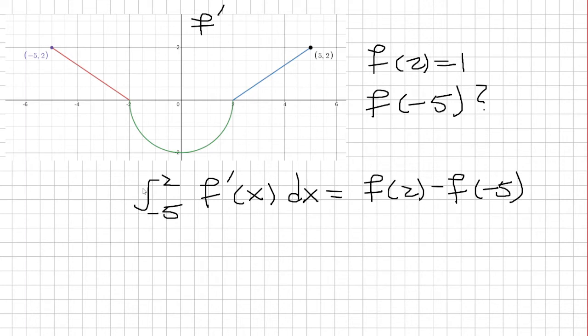Now, what is the integral from negative 5 to 2 of f prime of x? Well, that's just going to be the area from negative 5 all the way up to 2. So we have the area from negative 5 to 2. That's just a right triangle. The base is 3. The height is 2. Area is 1 half times base times height. So that's going to be 3.